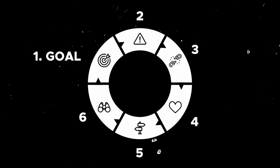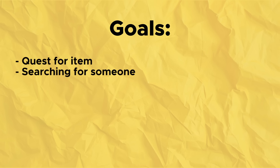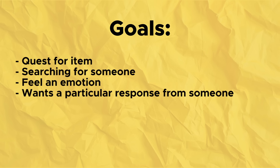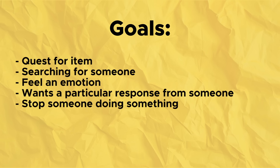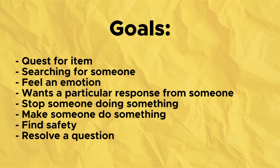The first step is to define your character's goal. Defining the goal is very simple — you just write down what does your character want. Maybe your character is questing for a particular item, perhaps searching for a person, or wanting to feel a specific emotion or get a particular response from another character. Perhaps they want to stop someone from doing something, make someone do something instead, or maybe they're trying to manipulate them. Your character's goal might be to find safety or to resolve a question — there are lots of different options.